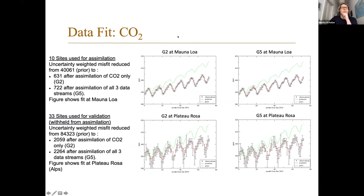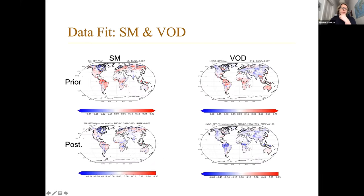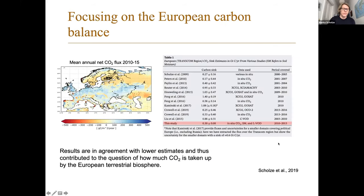We can look at the data fit. Here against the CO2 data - these are Mauna Loa as a station we used, and Plateau Rosa in the Italian Alps, which we didn't use - so that's a validation. The red line is the optimized model and the green line is the prior model. We can look at this also for soil moisture and VOD. On the left-hand side you see the soil moisture - that's a mean difference plot over the overall time period - and on the right, the VOD. Top is prior, bottom is posterior, and we see that we improve both. Then we can make use of the optimized parameters and look at more interesting quantities, like the net flux.